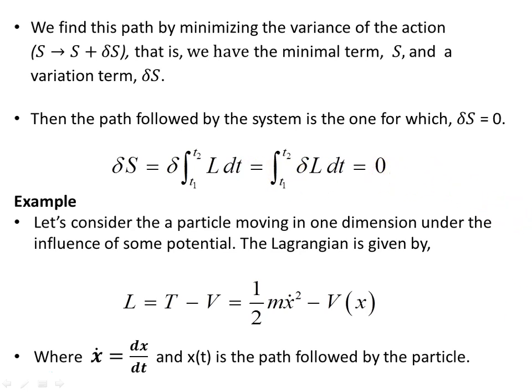So as an example, we're going to consider a particle moving in one dimension under the influence of some potential. So here's the Lagrangian. Here x dot is dx/dt, and x(t) is the path followed by the particle.